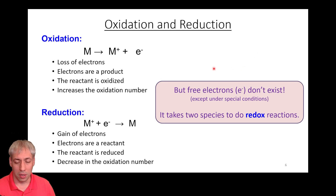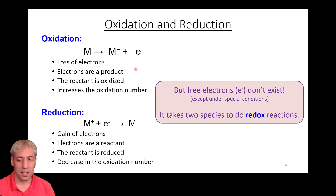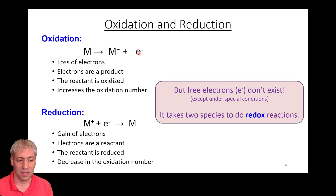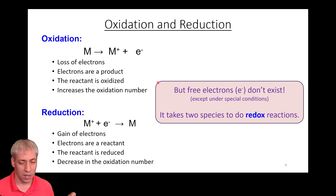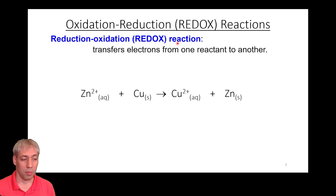This is nice formal bookkeeping to track where electrons go — are they gained or lost? But the reality is free electrons don't exist under normal conditions. In solution, solid state, batteries, or solar cells, there's no free e⁻ floating around. Instead, electrons move between species: one gains an electron and one loses an electron. That's what we mean by redox reactions — reduction and oxidation both occurring, with electrons transferred from one species to another.